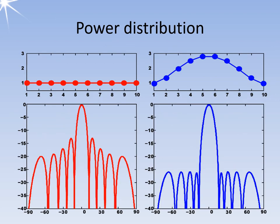A uniform power distribution, left in red, forms the narrowest main lobe but has quite large side lobes with a maximum of around minus 13 decibels. With a Dolph-Chebyshev distribution, right in blue, the main lobe is somewhat wider, but the level of the side lobes is only minus 26 decibels here.